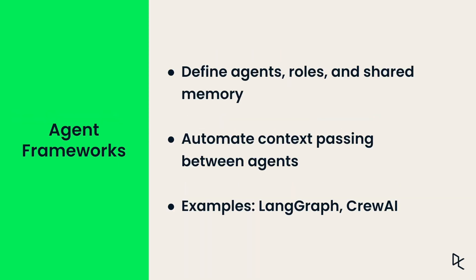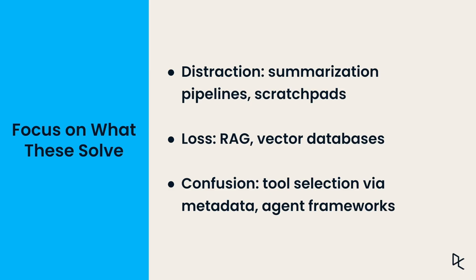Agent frameworks organize multi-agent workflows. They define roles, automate context parsing, and manage shared memory, letting you scale complex setups without reinventing the wheel. Each of these techniques solves a failure mode: summarization and scratch pads reduce distraction, RAG and vector databases prevent loss of knowledge, and metadata and frameworks reduce confusion. You have all of these tools and can use the right tool for the right fix.